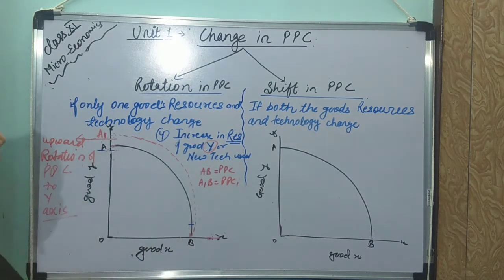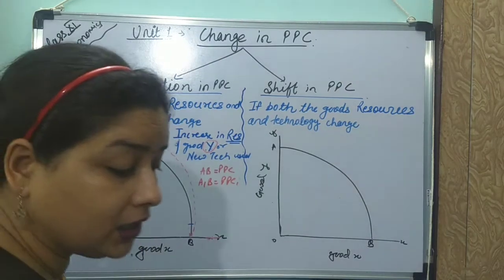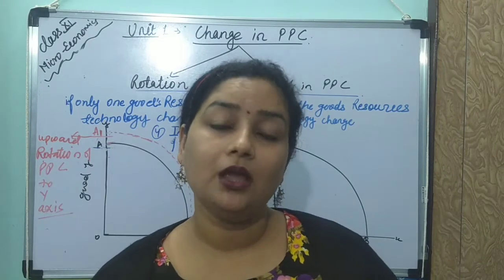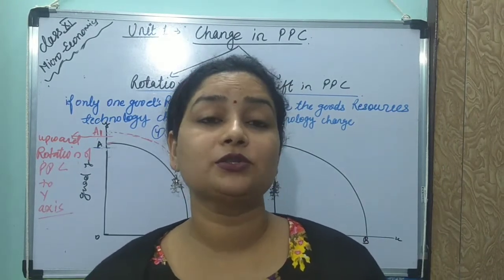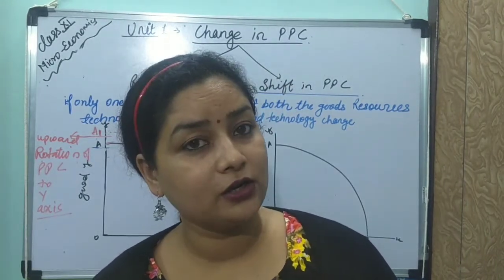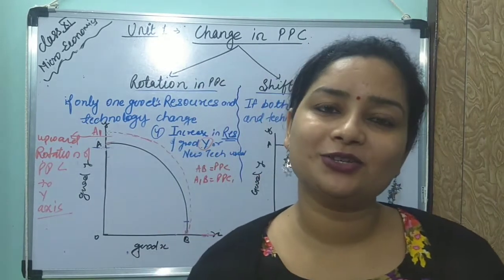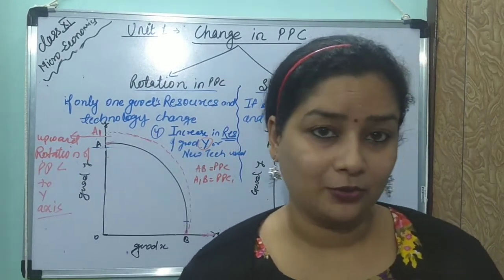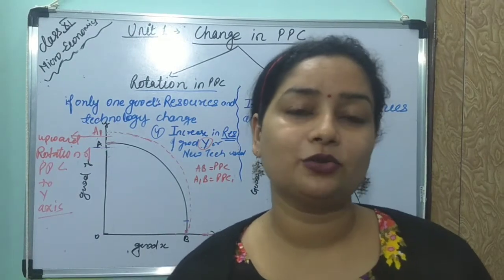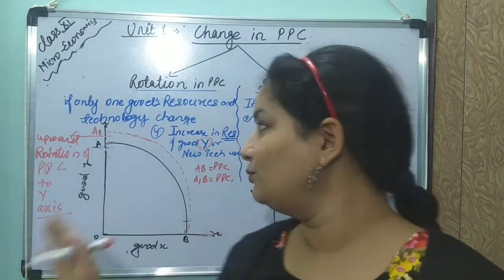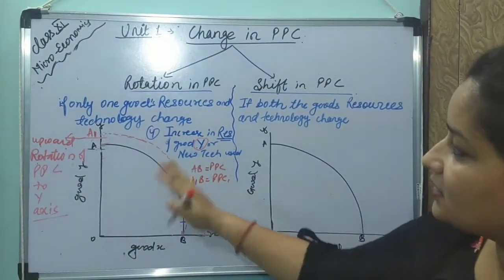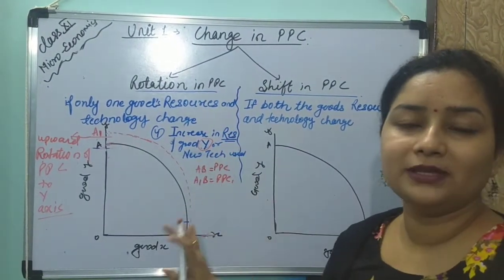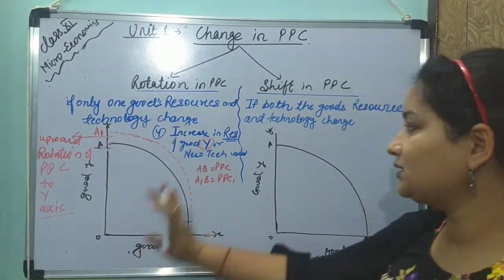So there were four rotation situations: first, decrease in resources of Good X or outdated technology → inside rotation on X axis; second, decrease in resources of Good Y and outdated technology → downward rotation to Y axis; third, increase in resources of Good X → outside rotation on X axis; fourth, increase in resources of Good Y → upward rotation to Y axis. These are the four situations for rotation of PPC.